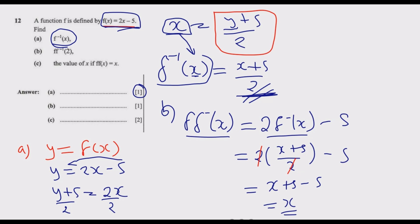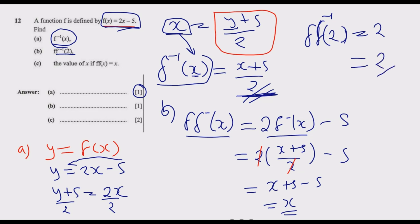Now we need to find f(f⁻¹(2)). Since f(f⁻¹(x)) = x, we substitute x = 2, and whatever x is we put 2. So our answer is simply 2.